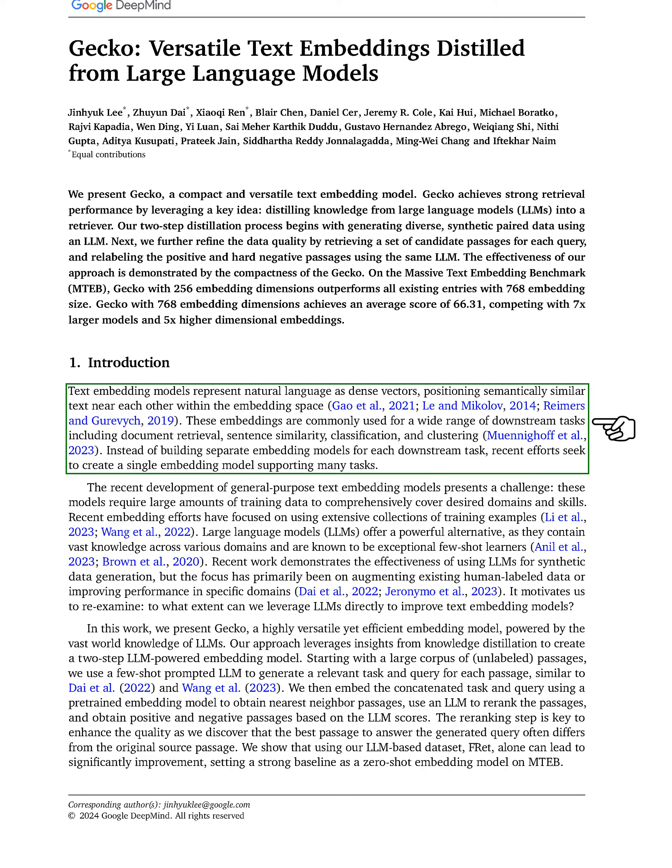In this section, we discuss text embedding models, which represent natural language as dense vectors to group similar text together in the embedding space. These models are widely used for tasks like document retrieval, sentence similarity, and classification.